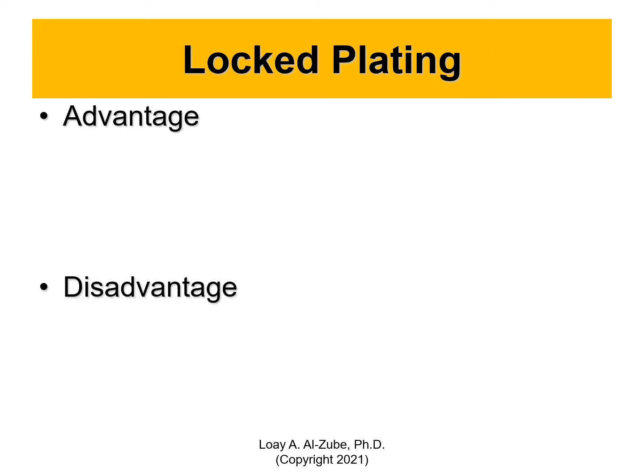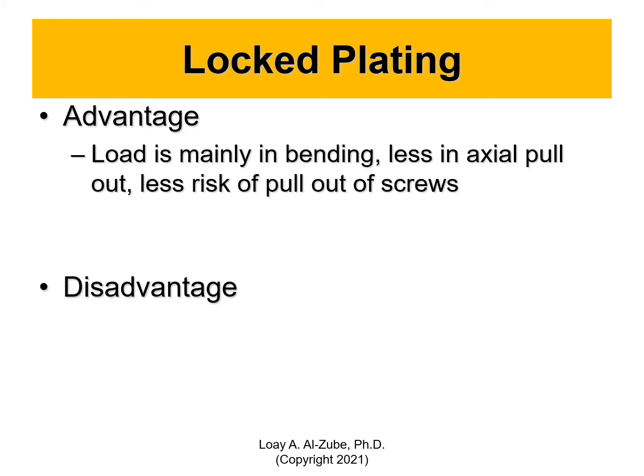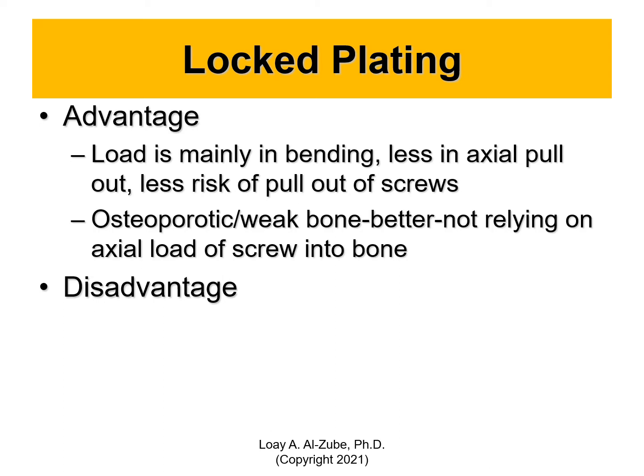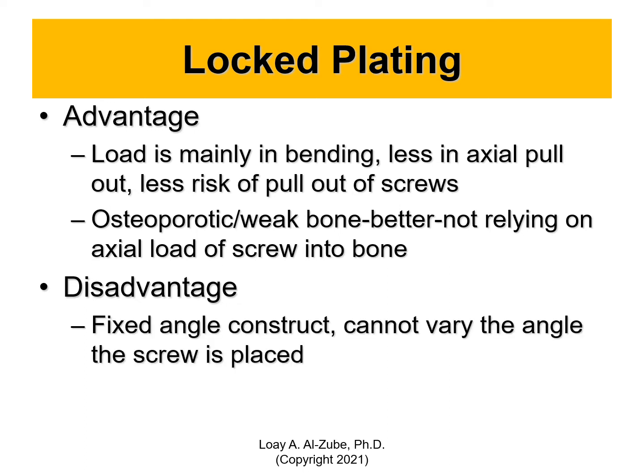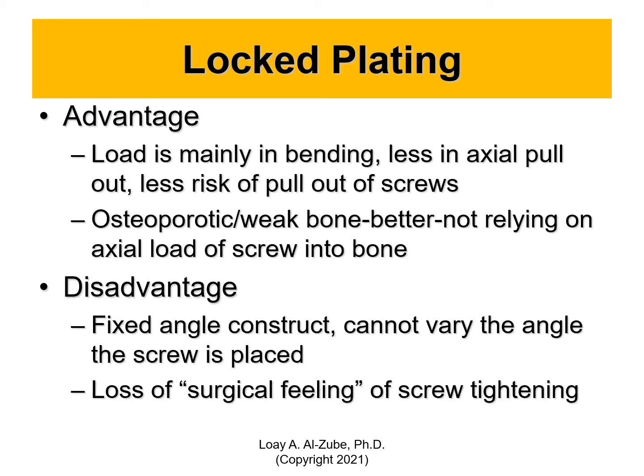Locked plating load is mainly in bending, less in axial pull. Because it's housed in its location, we're not worried about it coming out by axial force — but bending is a problem. Less risk for pull-out of screw. For osteoporotic and weak bone, it's better not to rely on axial load of a screw into bone, so we prefer locked plating for osteoporotic and weak bone. The disadvantages: fixed angle construct — we don't have angulation — as well as loss of surgical feeling, because physicians would like to feel how deep and how strong the bone is.